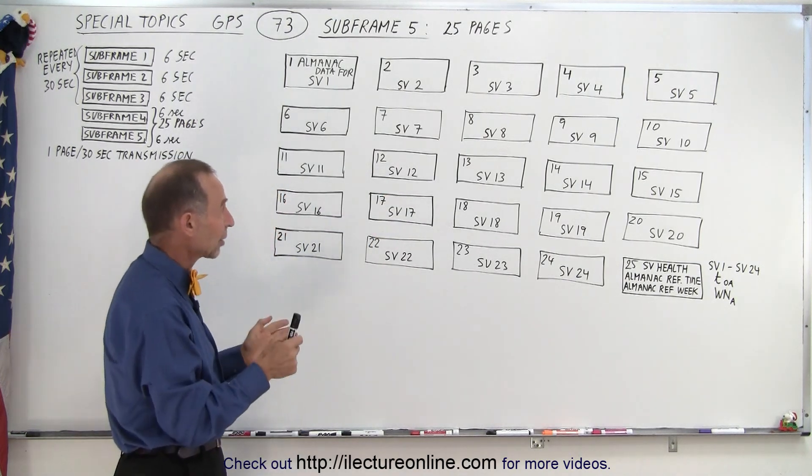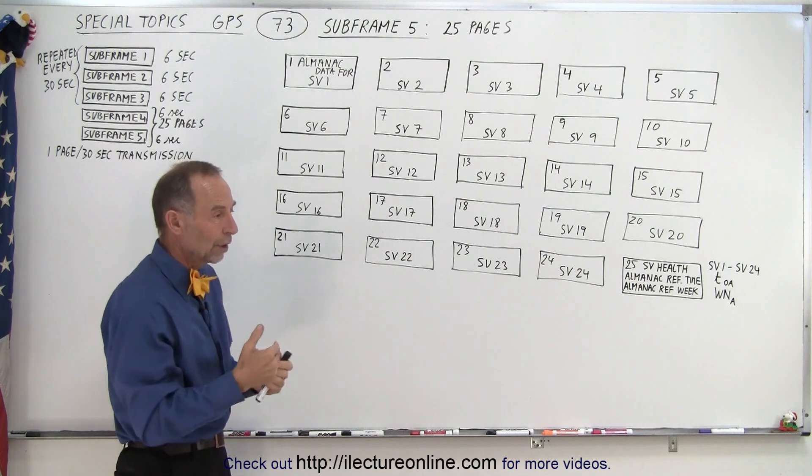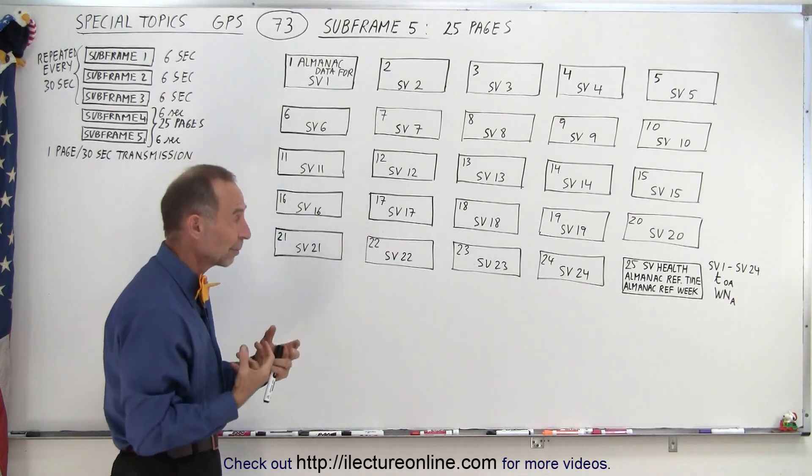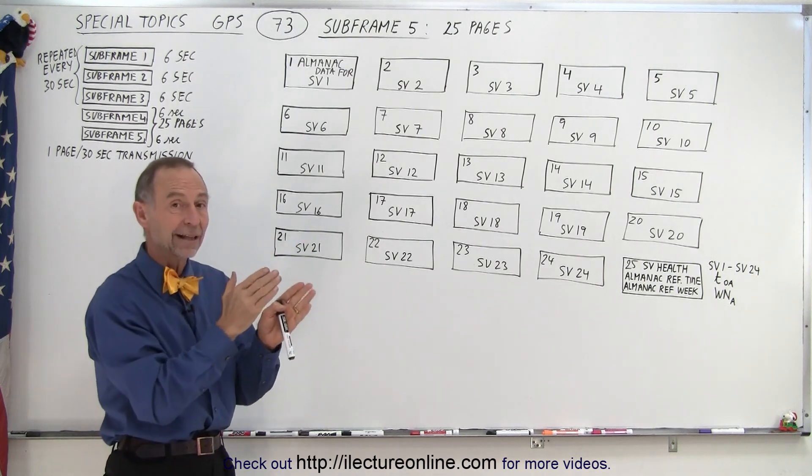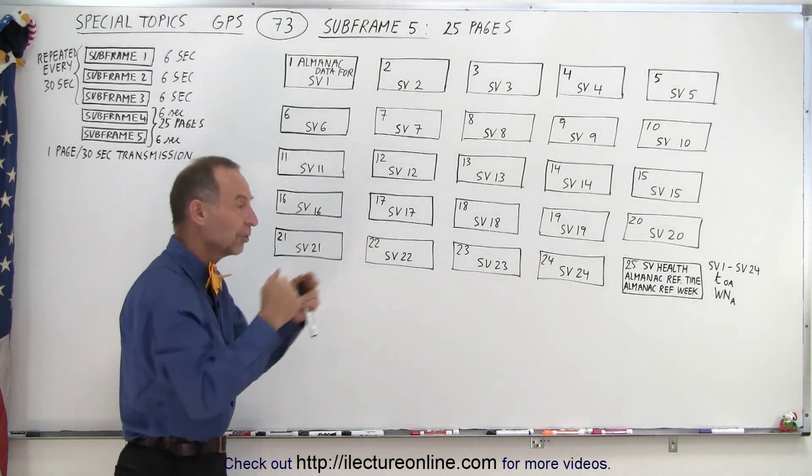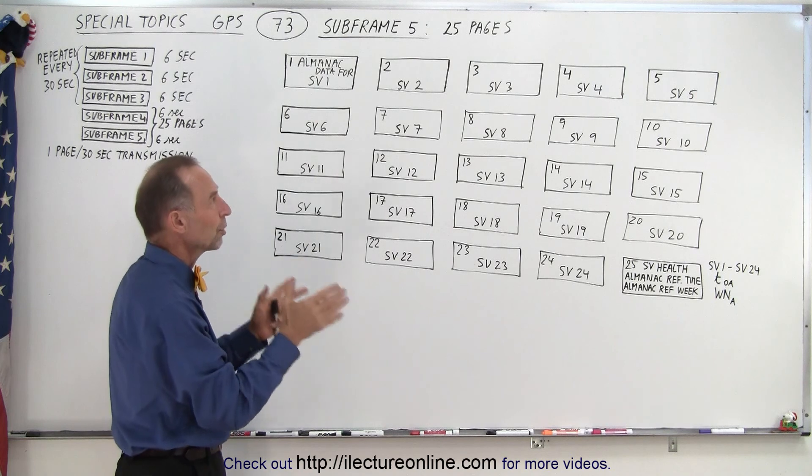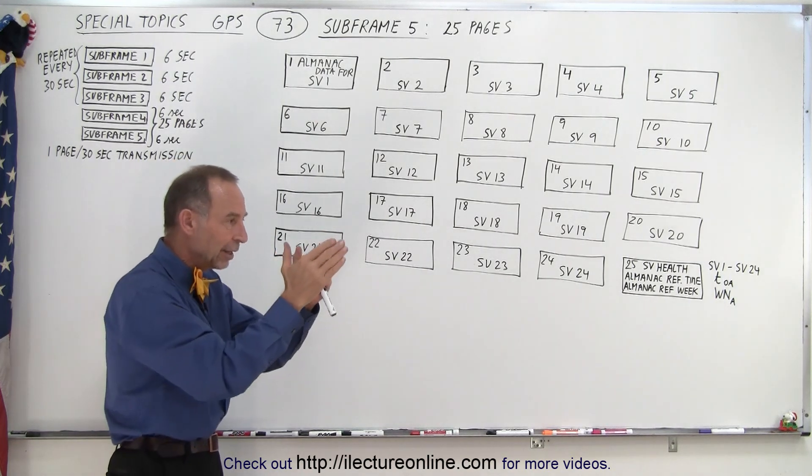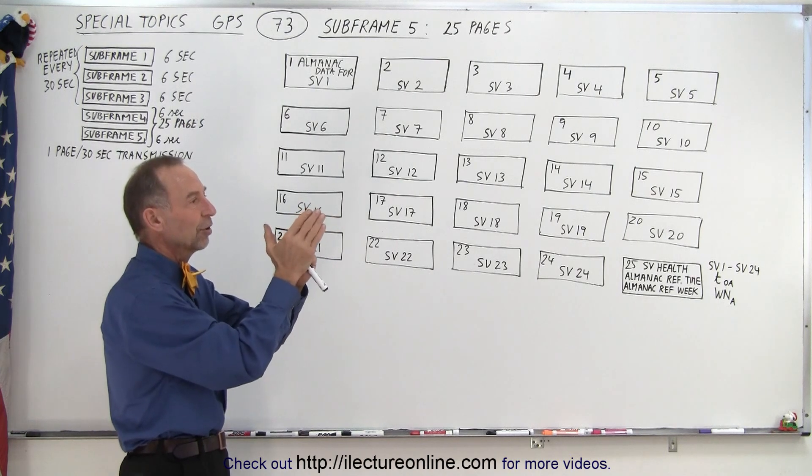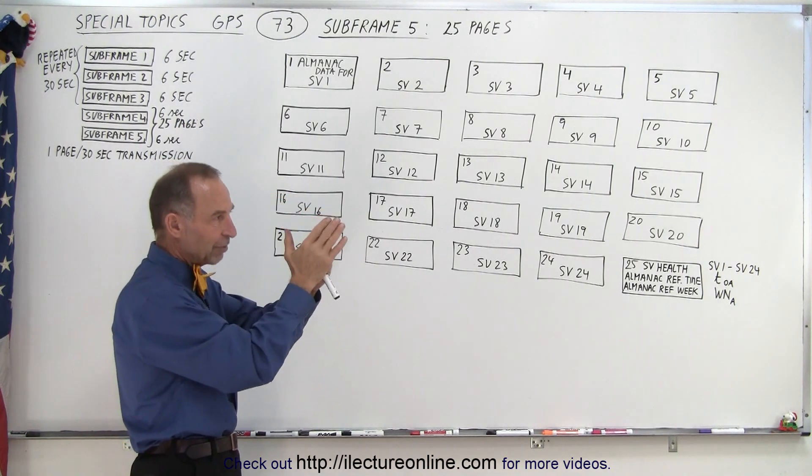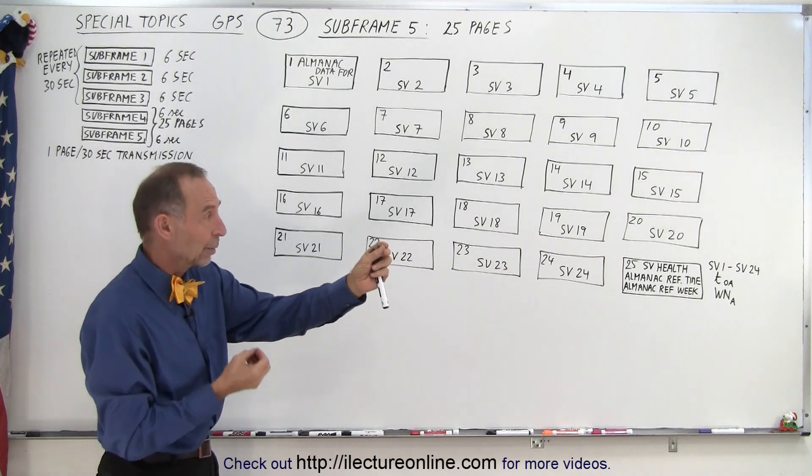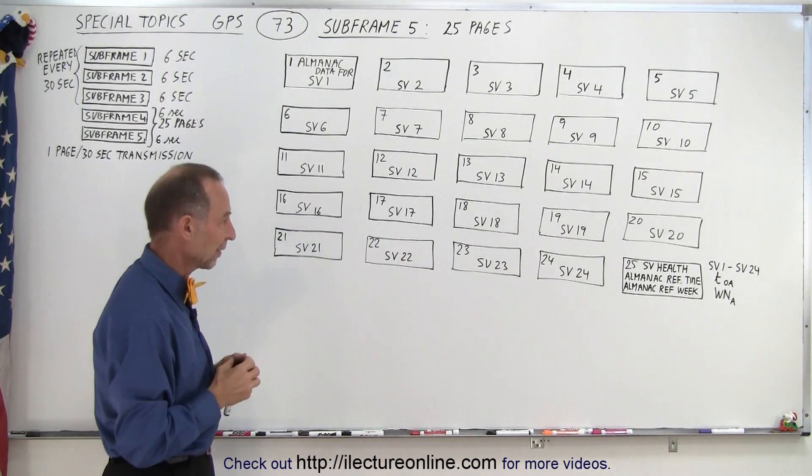Now the almanac data is not as accurate as the ephemeris data. So once we lock onto a satellite, we then want to get the ephemeris data from that one satellite, because each satellite has its own ephemeris data. That data is much more accurate than the almanac data. So we then are able to get very close to where exactly the position of the space vehicle is, the satellite is. And from that, we should be able to find out exactly what our position is on the Earth very, very accurately.